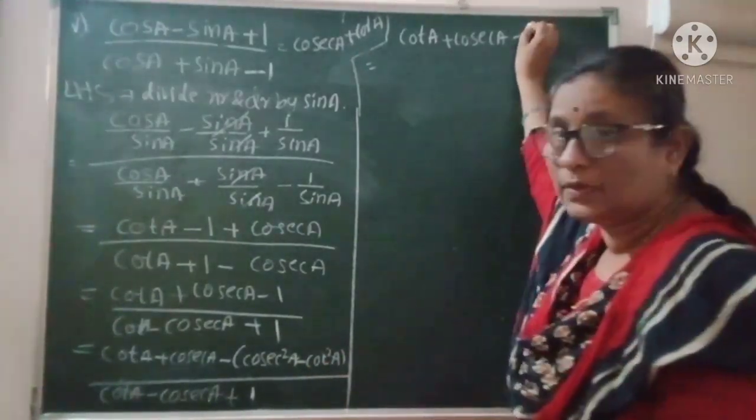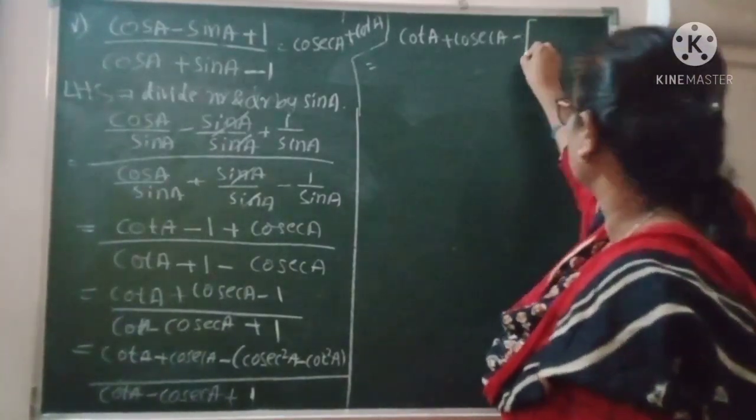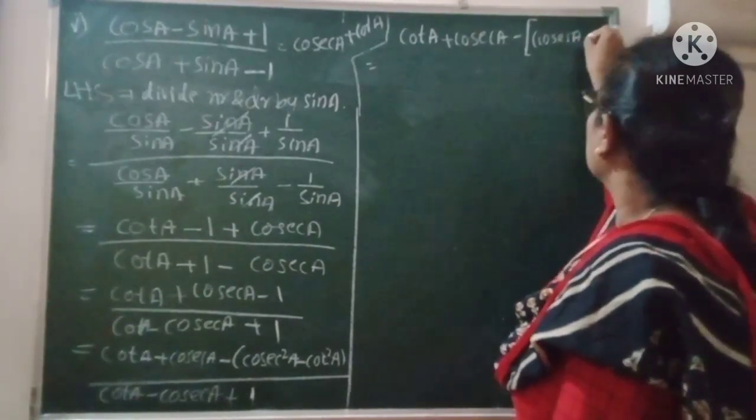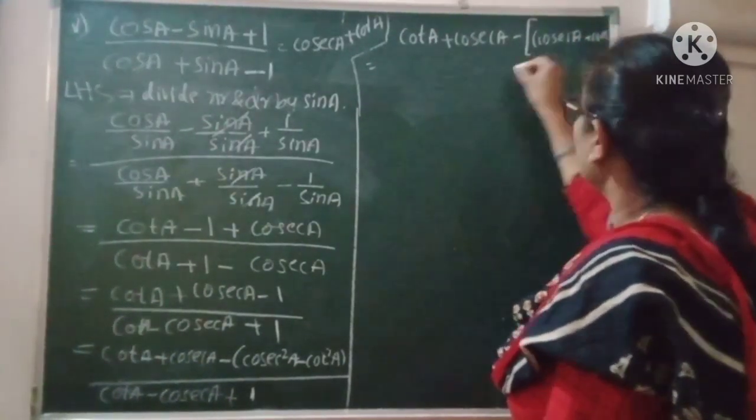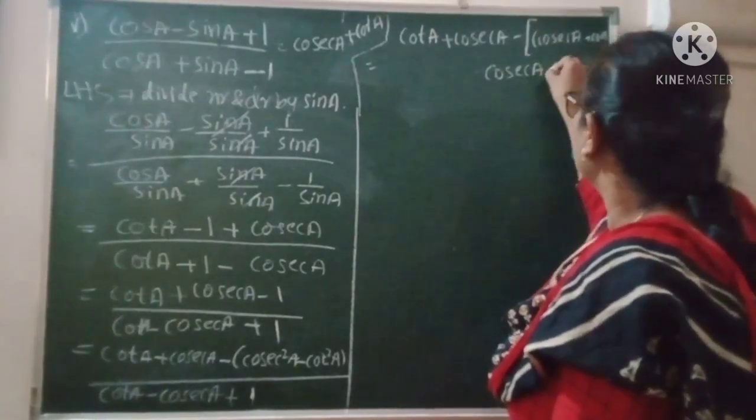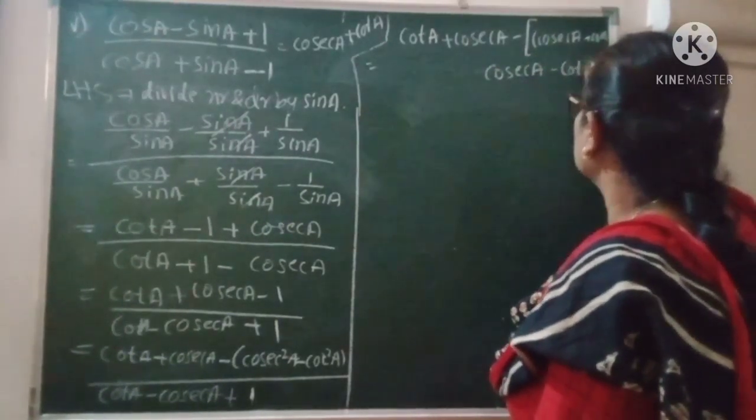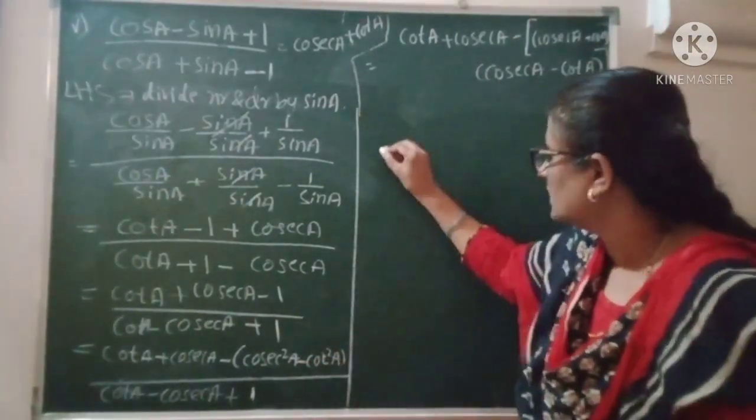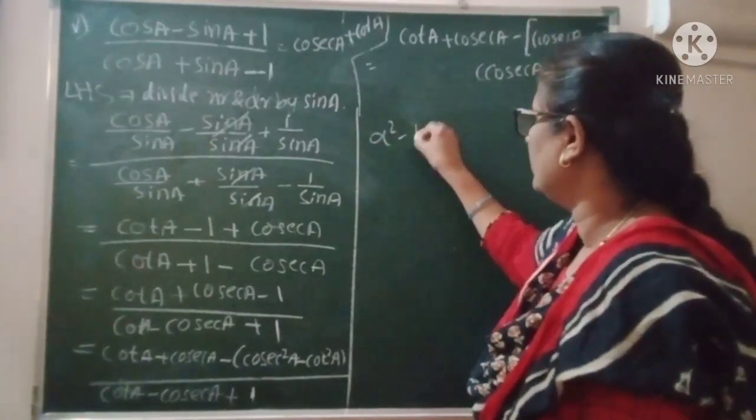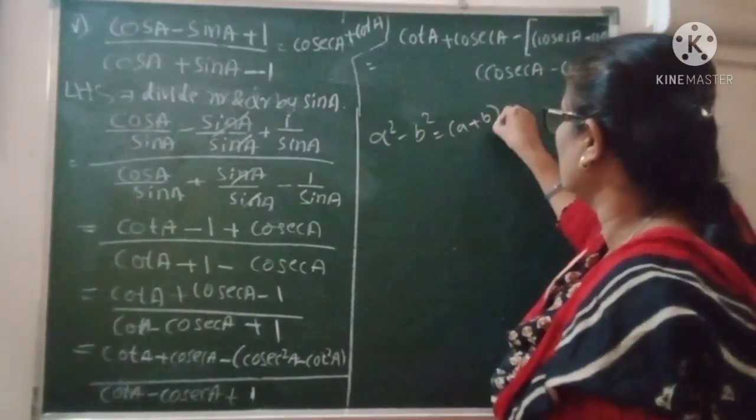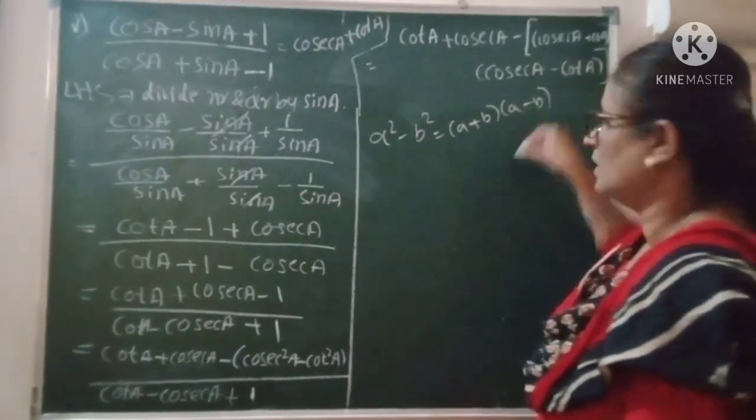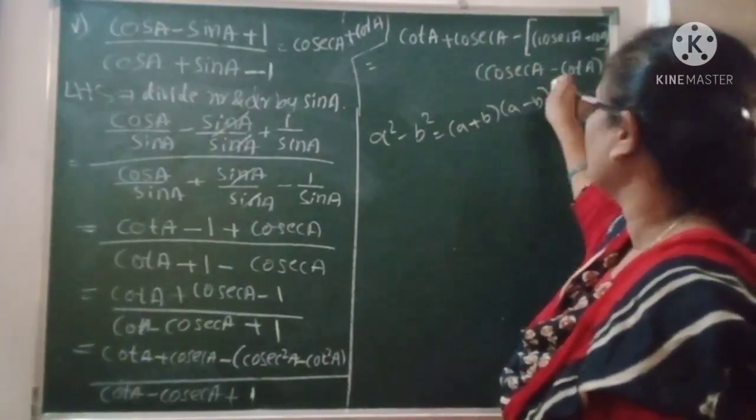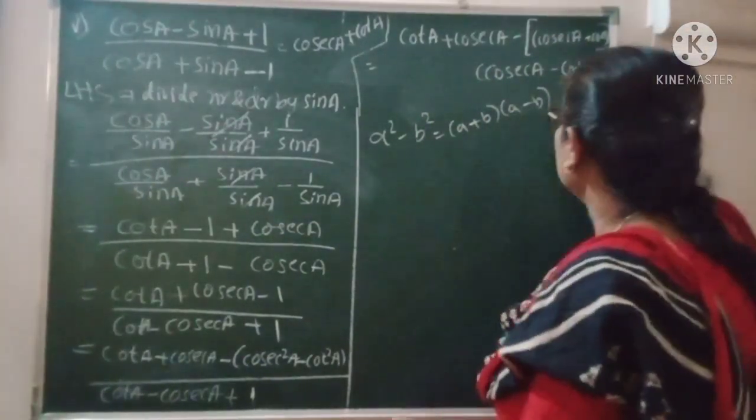into cosec A minus cot A. This is the expansion using A² - B² = (A + B)(A - B). We're going to factor this.